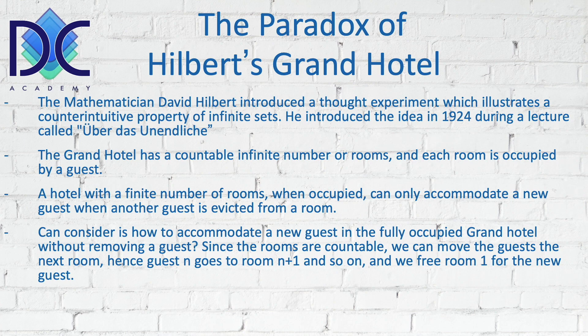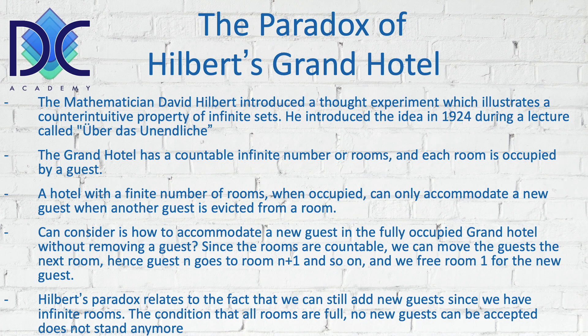Due to the fact that we have a countable infinite number of rooms, we have that one-to-one and onto function between the two sets of elements, and we can just move the guests to accommodate more of them. The paradox that Hilbert created is that we can still add new guests even when we have infinitely many occupied rooms. The condition that all rooms are full and no new guests can be accepted no longer holds. The countably infinite number of rooms means we can keep adding guests without anyone having to leave.